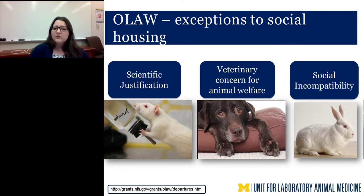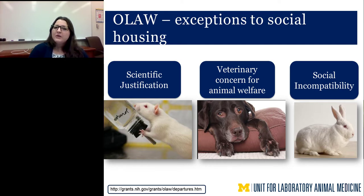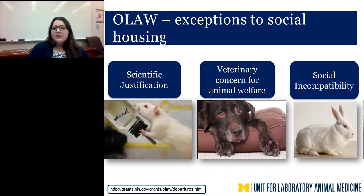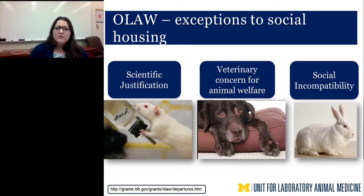OLAW has similar regulations and describes three main justifications that allow a socially housed species to be singly housed: scientific justification — for example, needing to measure individual water consumption incompatible with social housing; veterinary concerns for animal welfare — such as an older animal needing special treatment where social housing might lead to injury; and social incompatibility — such as sexually mature male rabbits that cannot be safely housed together.